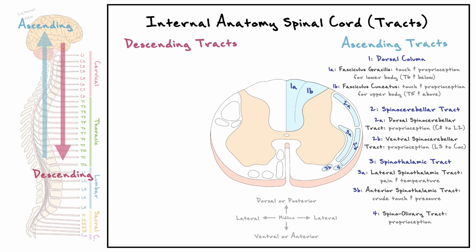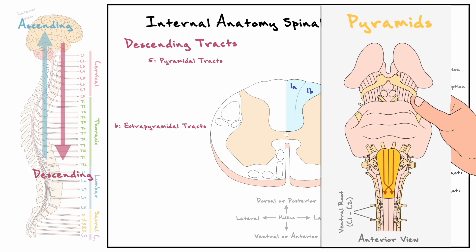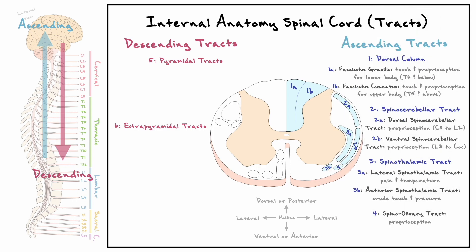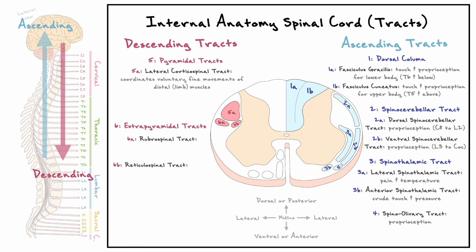When it comes to descending tracts, they can be broadly separated into pyramidal and extrapyramidal tracts. The pyramidal tracts pass through a brainstem structure called the pyramids, whereas extrapyramidal tracts take other routes to reach the spinal cord. In the lateral white column, there are three descending pathways: the lateral corticospinal tract, the rubrospinal tract, and the medullary division of the reticulospinal tract. The lateral corticospinal tract descends from motor regions of the brain to coordinate voluntary fine movements of distal muscles. The rubrospinal tract starts at the red nucleus and facilitates voluntary movements, mostly by activating flexor muscles. The medullary reticulospinal tract, arising from the medulla, plays a role in motor control, posture, and locomotion.